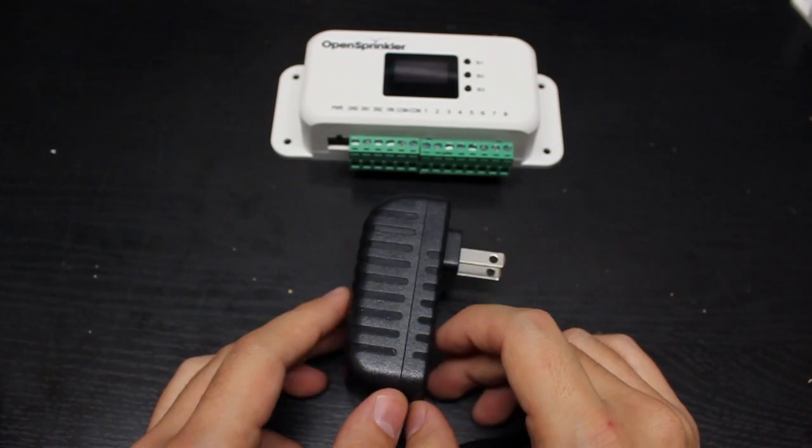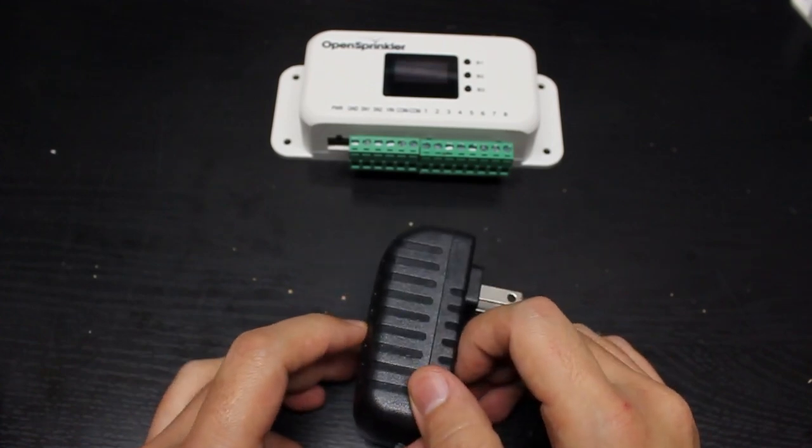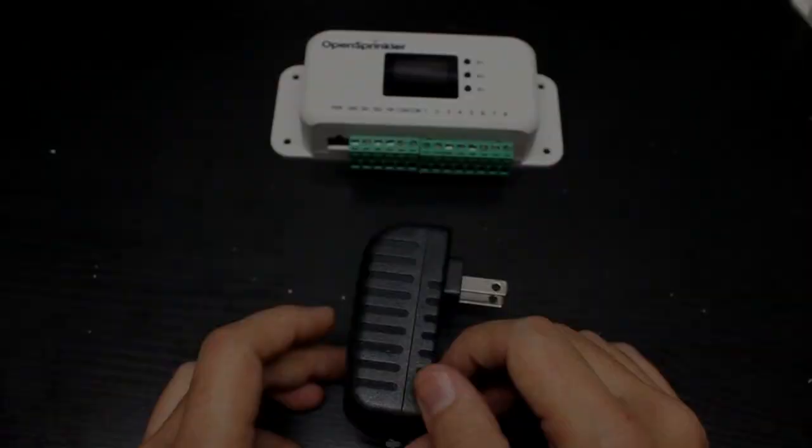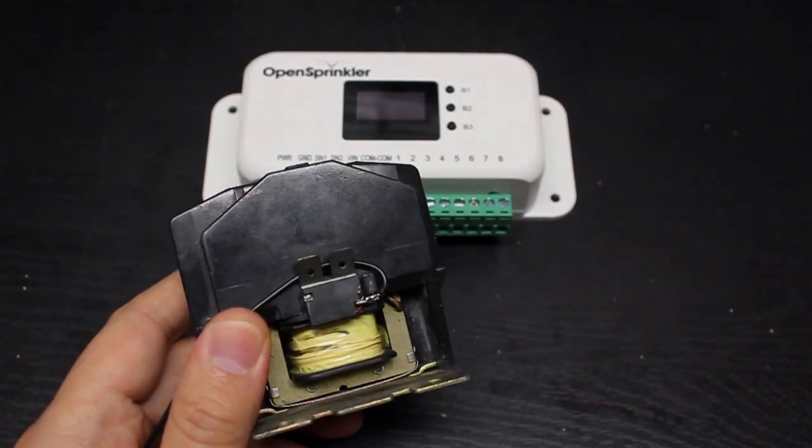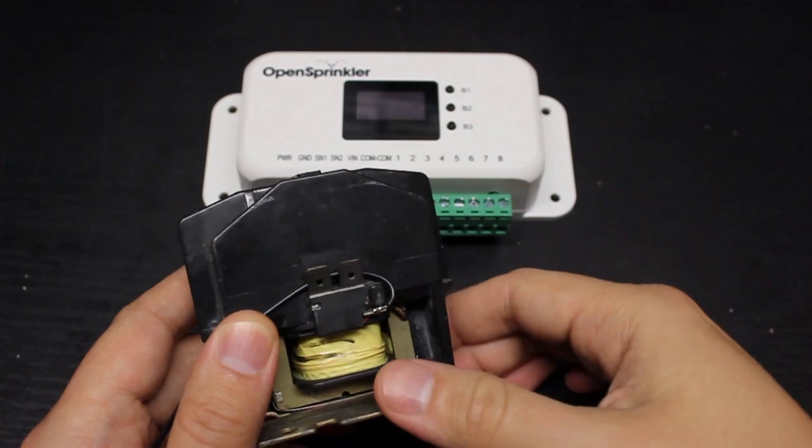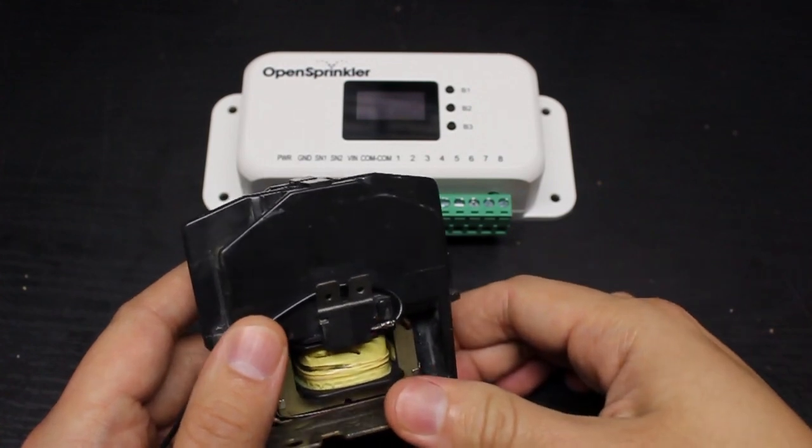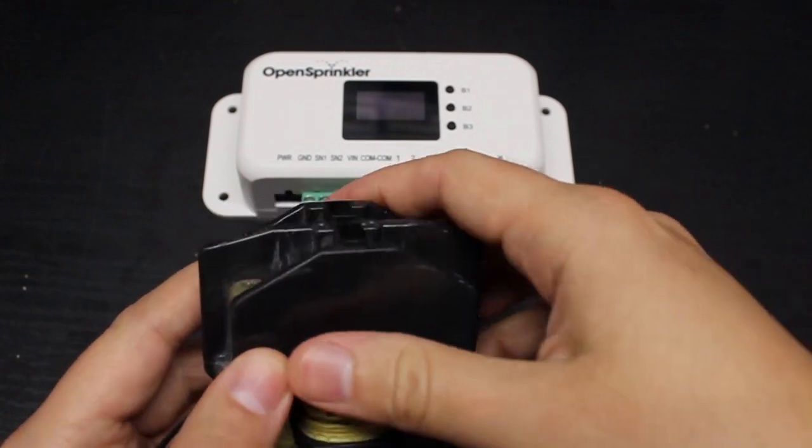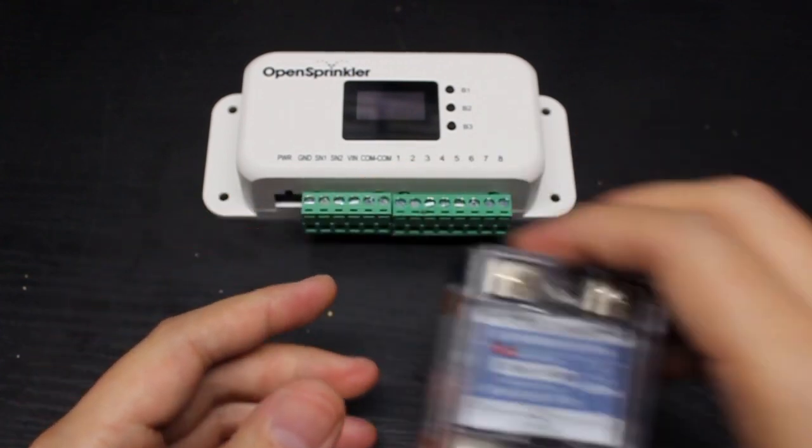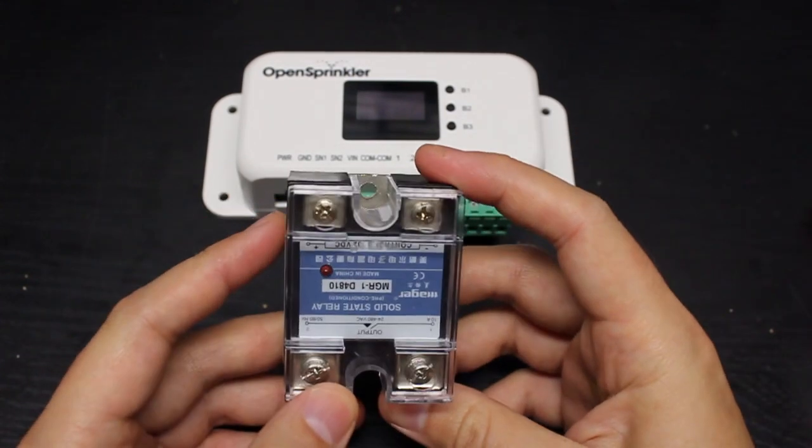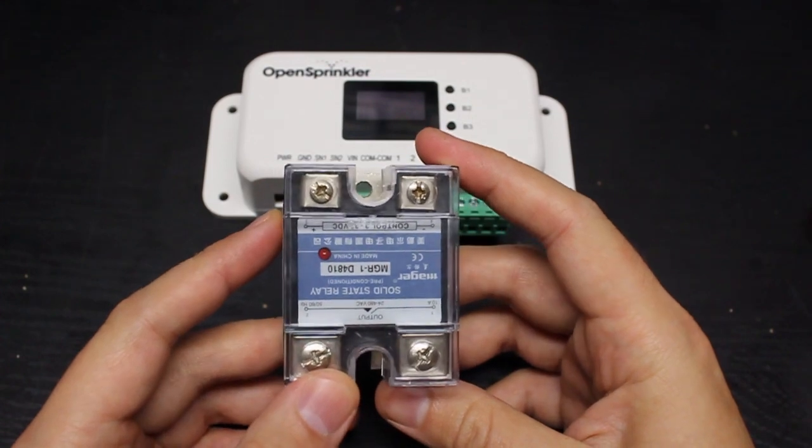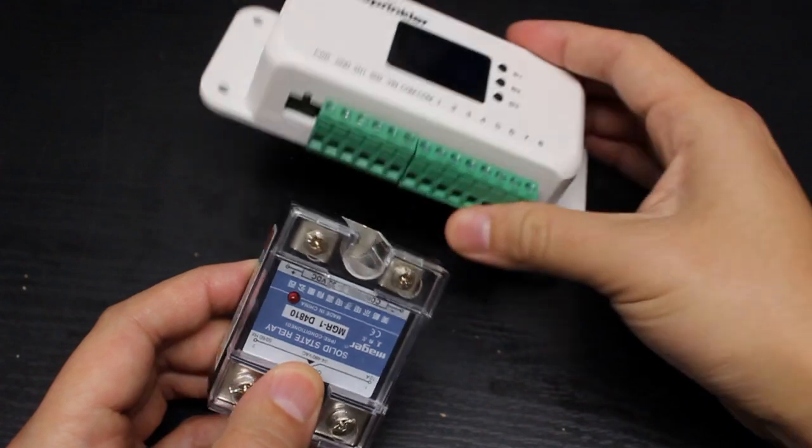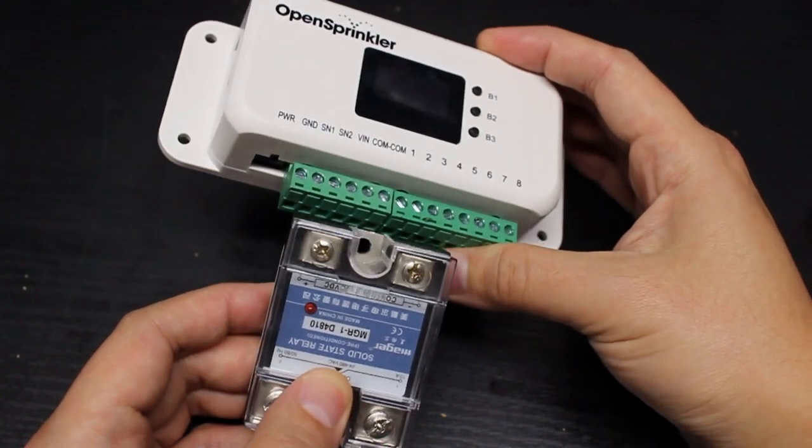And it can not only operate AC solenoid valves but also DC valves and DC relays too. The only downside is that it is not compatible with all pump start relays on the market. But there's a workaround. You can always replace these old school pump start relays with one of these more modern solid state relays which is pretty inexpensive, can drive a powerful pump and is fully compatible with the DC powered OpenSprinkler.